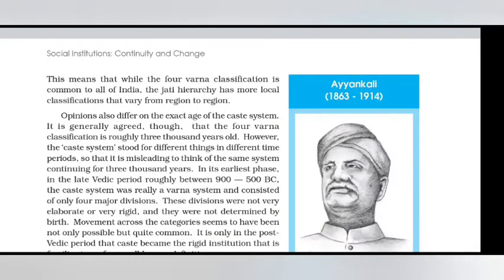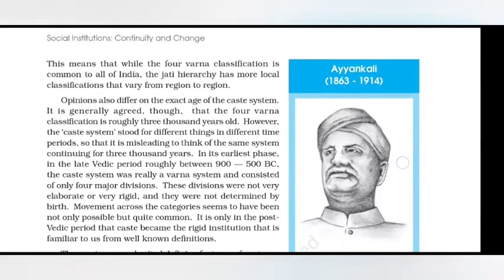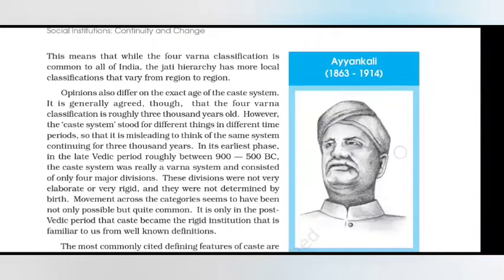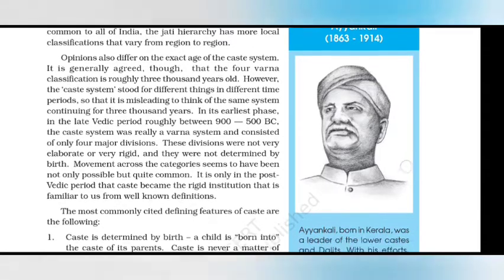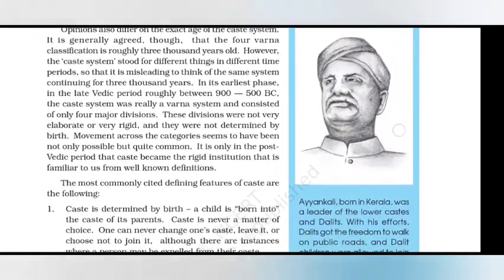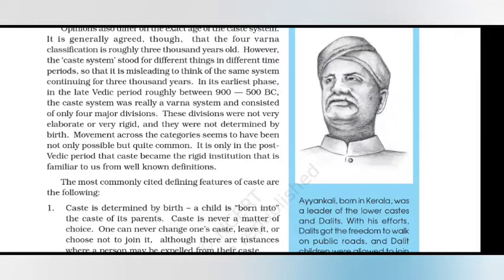The precise relationship between Varna and Jati has been the subject of much speculation and debate among scholars. The most common interpretation is to treat Varna as a broad all-India aggregative classification, while Jati is taken to be a regional or local subclassification involving a much more complex system consisting of hundreds or even thousands of castes and subcastes. Opinions also differ on the exact age of the caste system, though it is generally agreed that the fourfold classification is roughly 3000 years old.